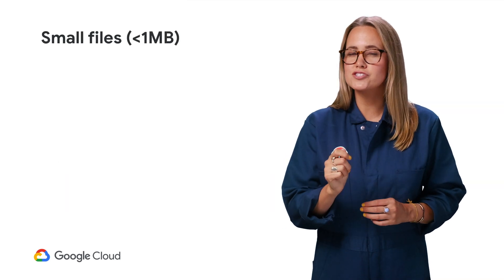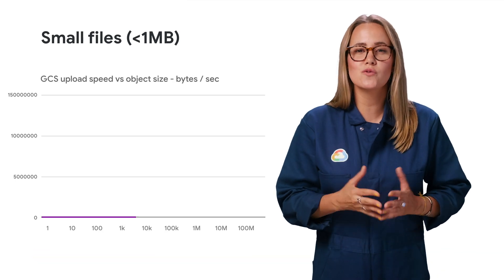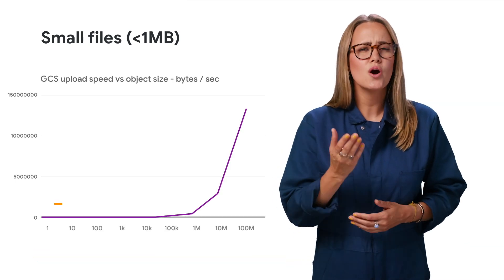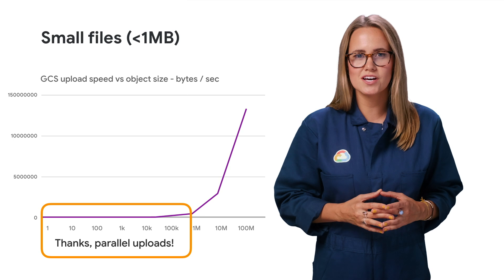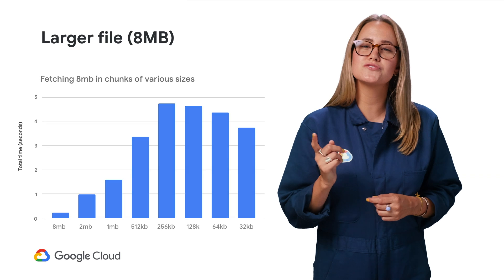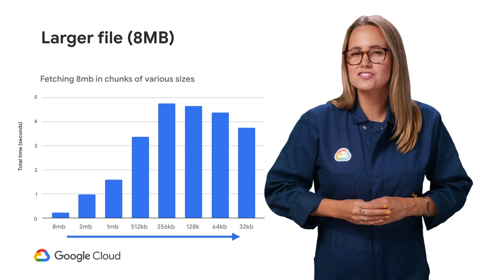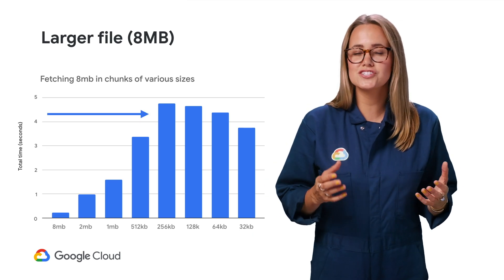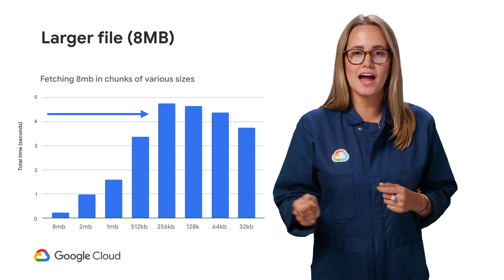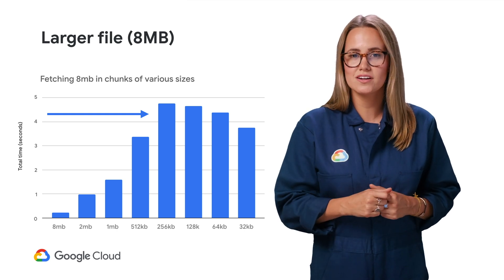If you run this script, you'll see that there are consistent results for files smaller than one megabyte, which we already knew from previous episodes. And if you run it again but tweak it slightly, using a larger file fetched through different chunks, you'll see that as chunk size decreases, the transactional overhead increases and slows everything down.